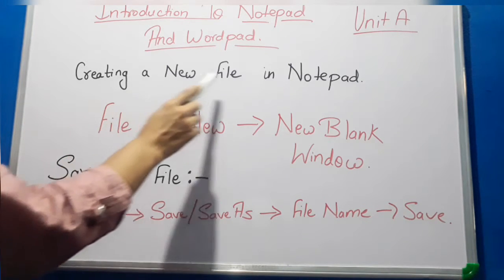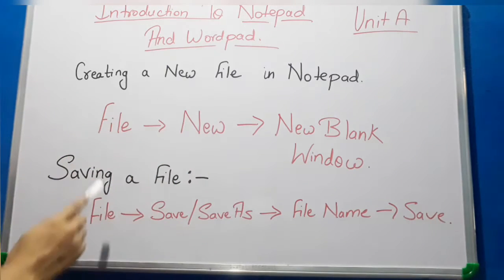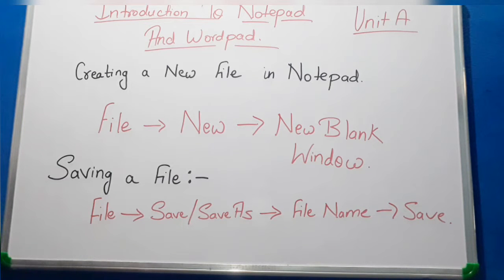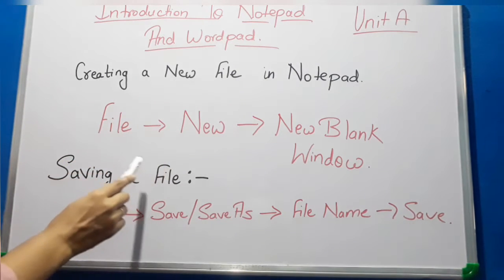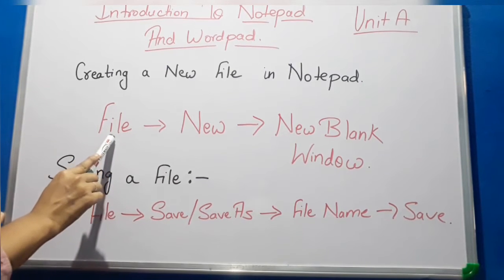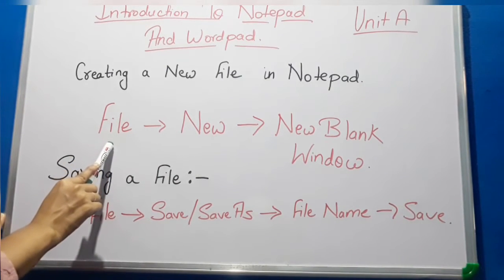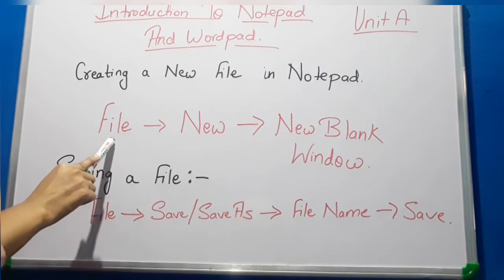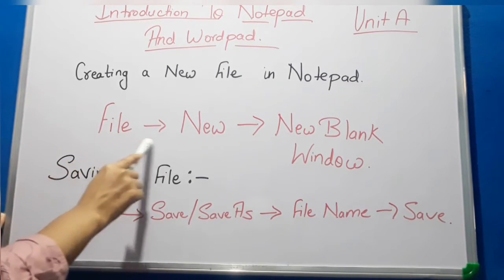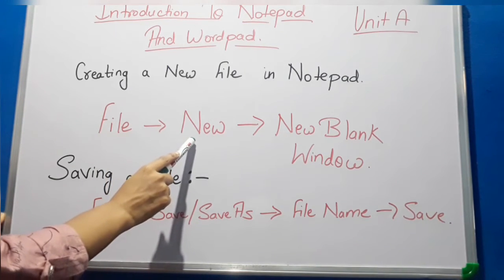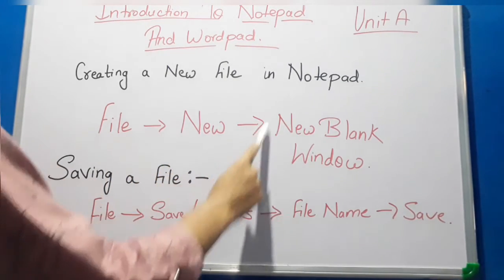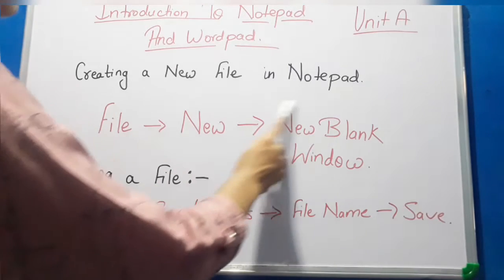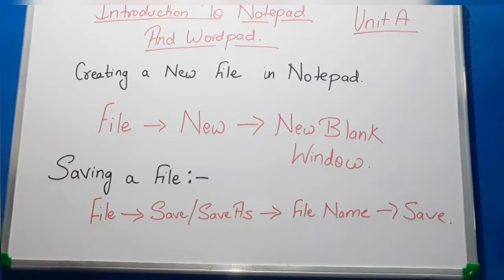Now we will see how to create a new file or how to save a new file. For creating a new file, you have to click on the File menu option and then there will be the option of New. You will click on that and a new blank window will appear on your screen.